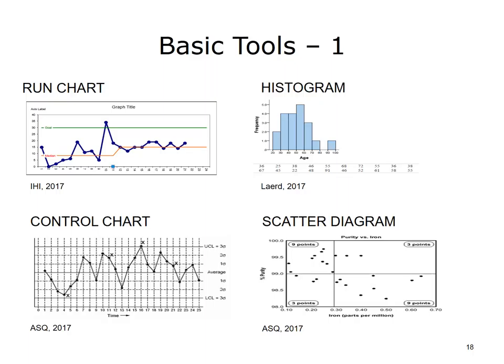Control chart: A control chart consists of chronological data along with upper and lower control limits that define the limits of common cause variation. A control chart is used to monitor and analyze variation from a process, to determine if that process is stable and predictable (from common cause variation) or unstable and not predictable (showing signals of special cause variation).